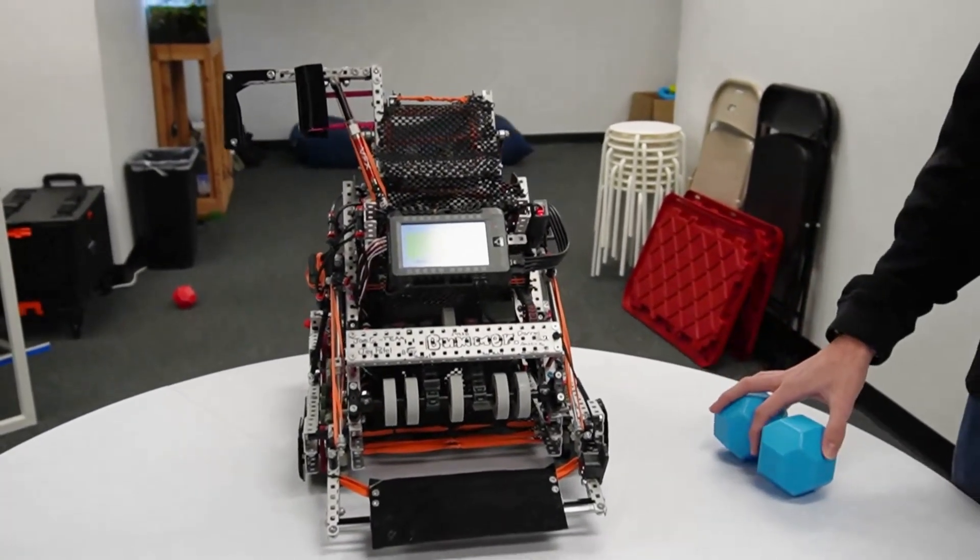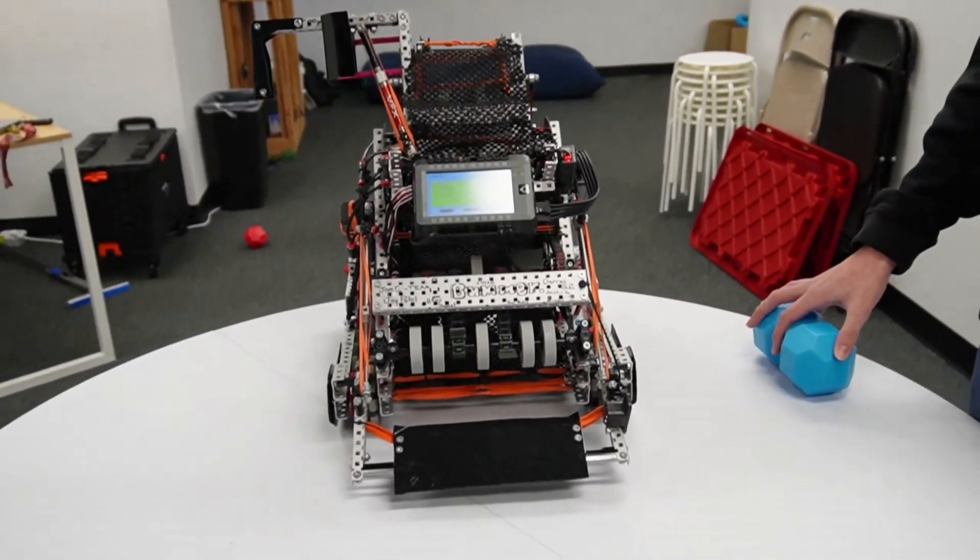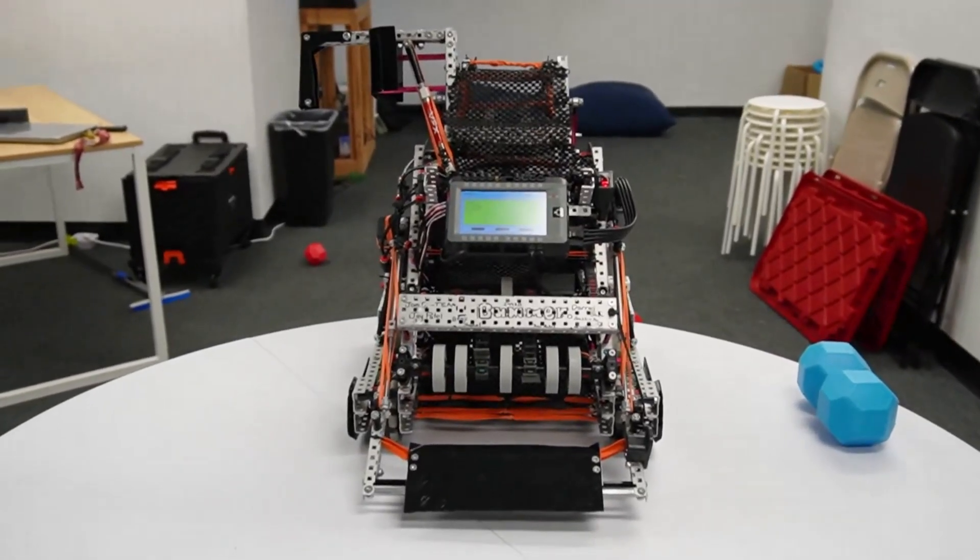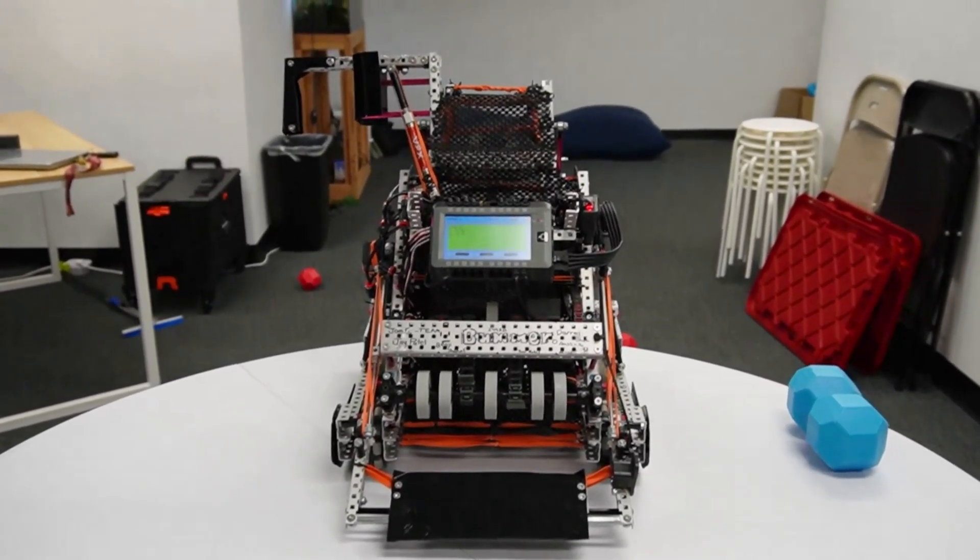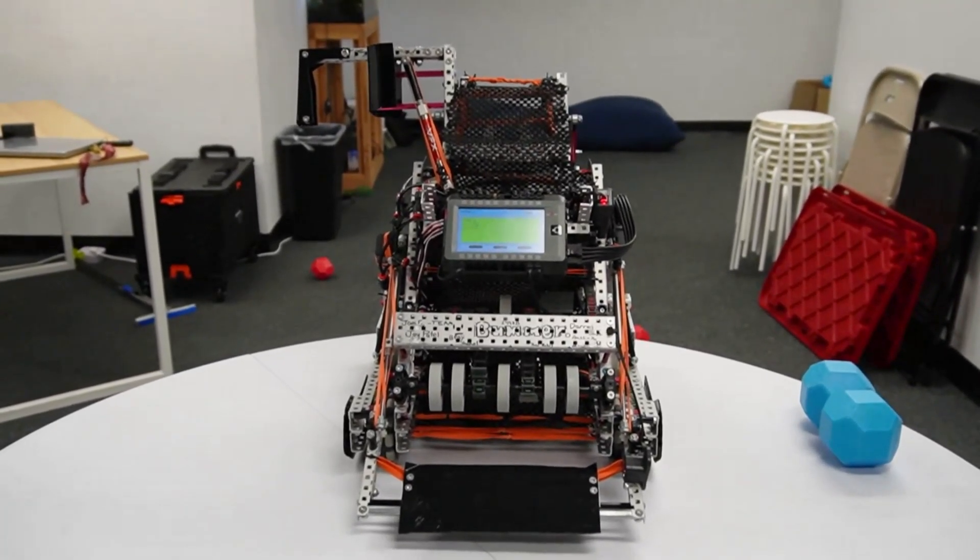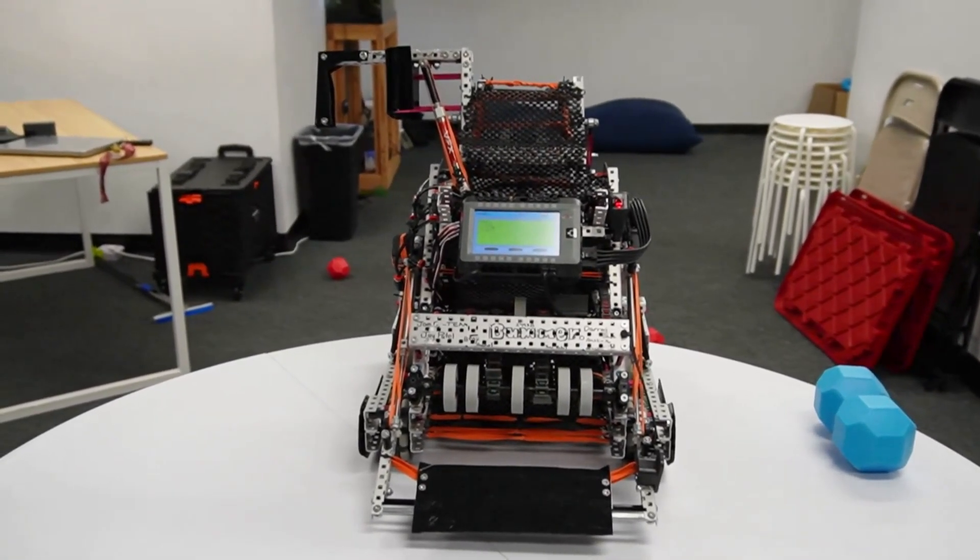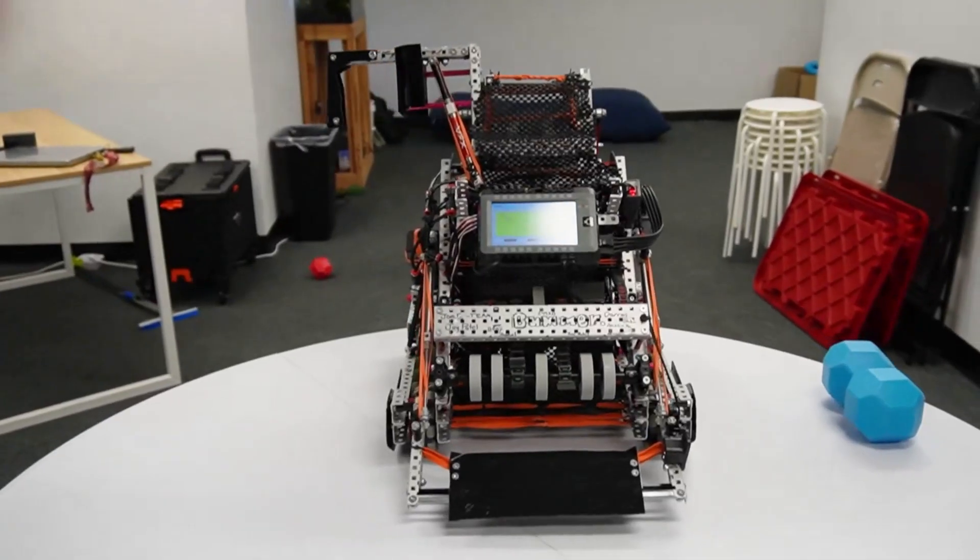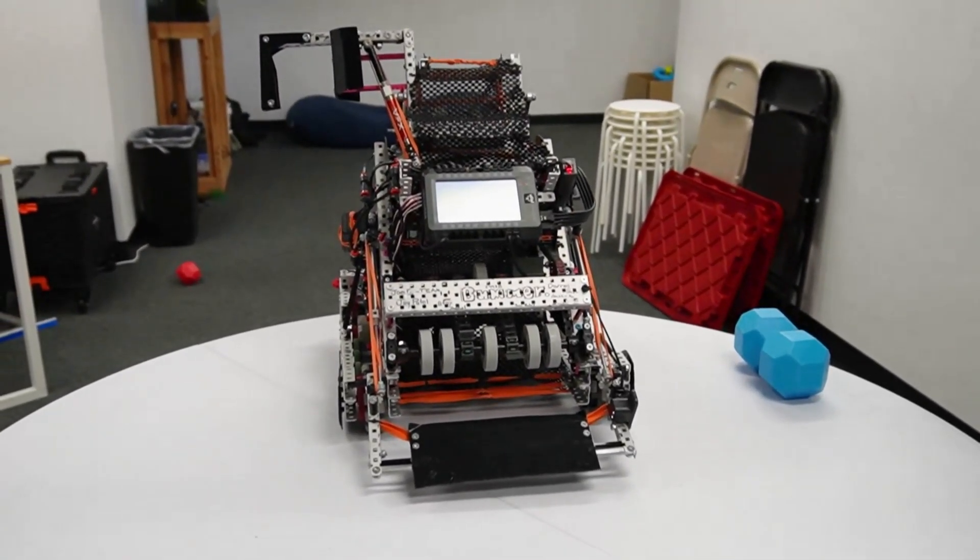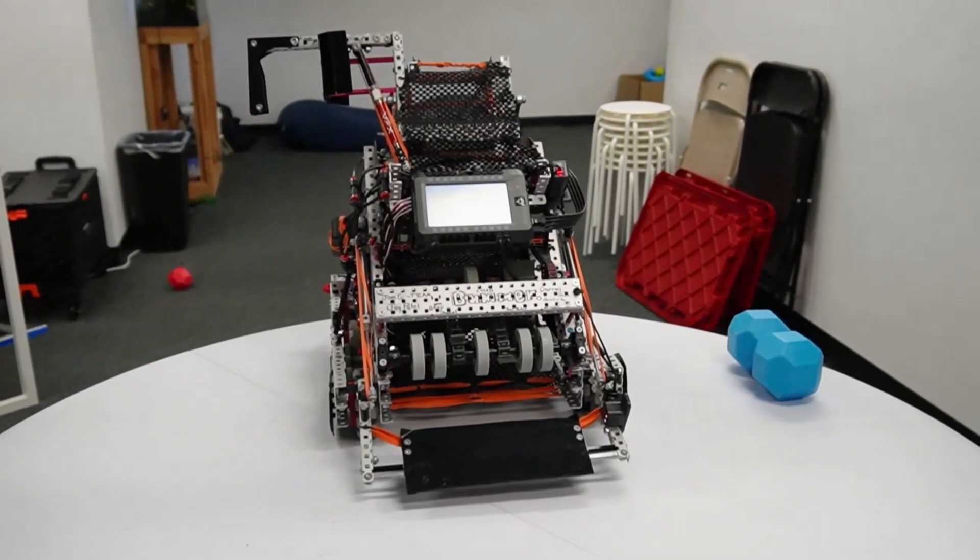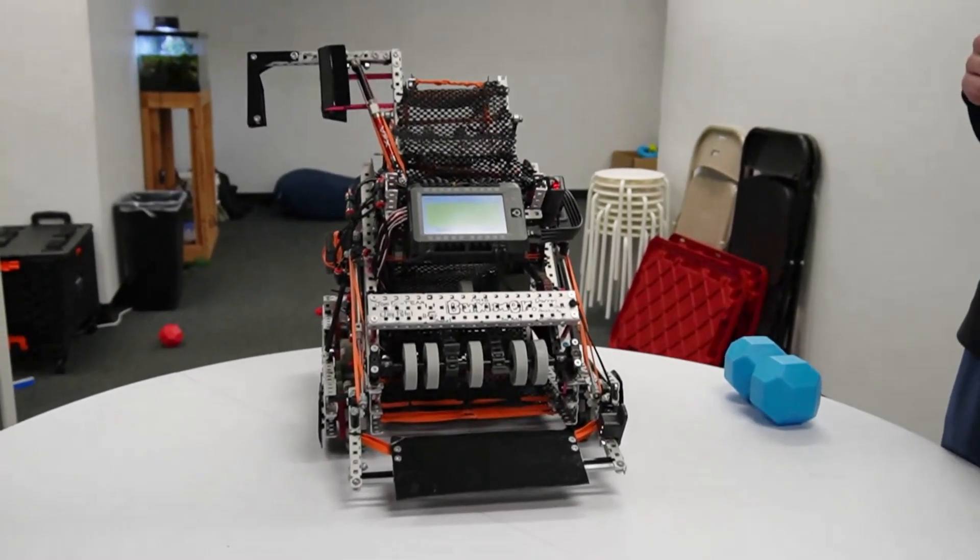Yeah, so one of the autonomous codes that I've been the most proud of that I've worked with a lot is the solo autonomous win point. This has gone through a lot of work, a lot of trial and error, but we've finally gotten it enough to where we can score nine blocks consistently. Three in the long goal, two in the central, and then four in the other long goal.